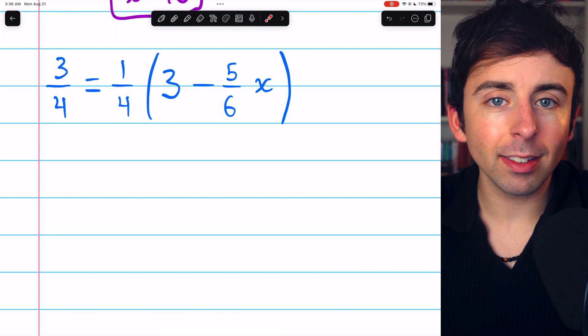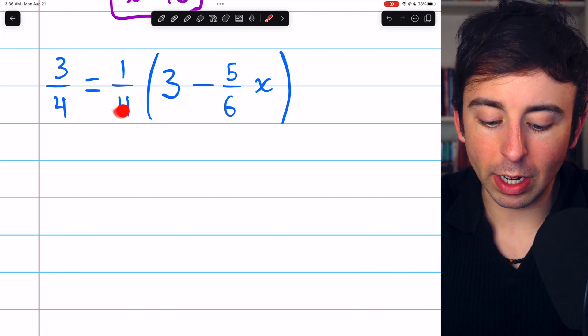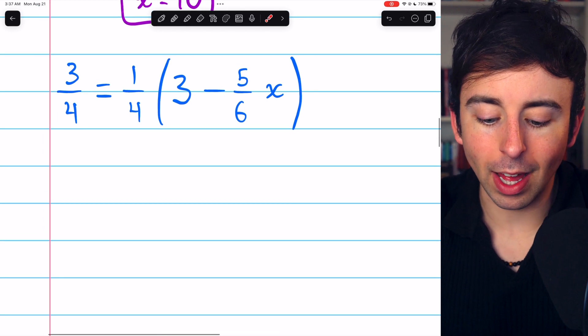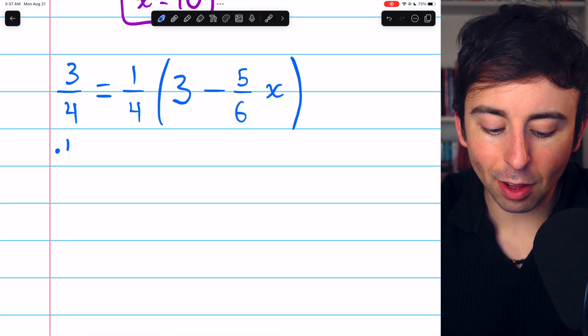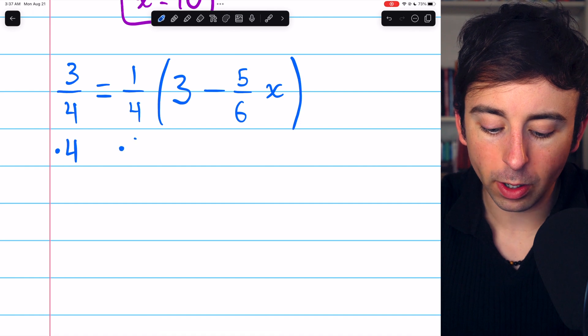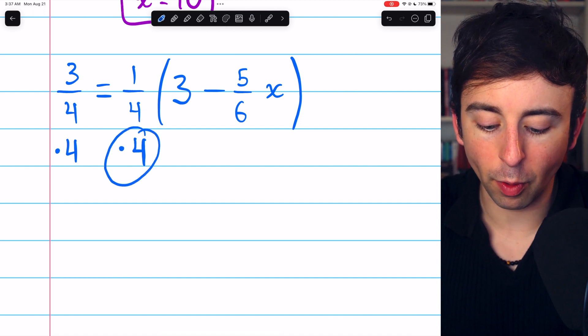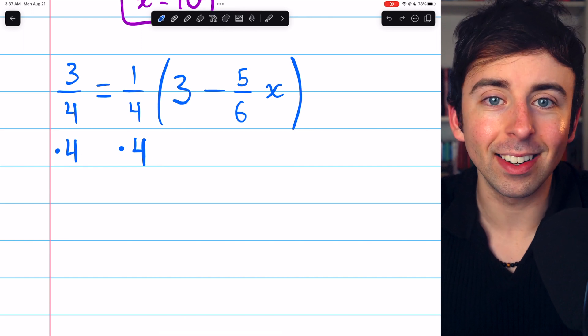But in this case, it's actually easier to just get rid of this fraction from the beginning. We could do that if we multiply the left side and the right side by 4, because this has a denominator of 4. So if we multiply by 4, it's going to cancel out with that denominator.